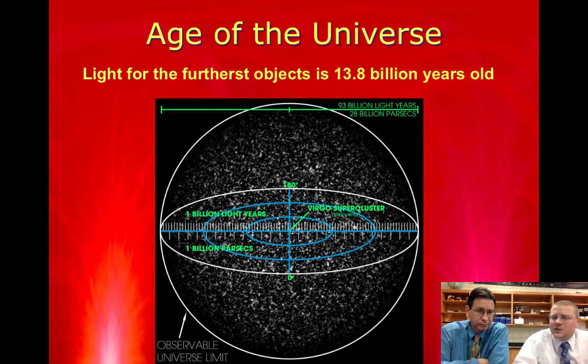So the furthest objects gave off light 13.8 billion years ago. Is that what they look like today? No, that isn't what they look like today. That's what they looked like 13 billion years ago. They have been changing, they've been evolving, but they're so far away it just takes that much time for light to get to us.